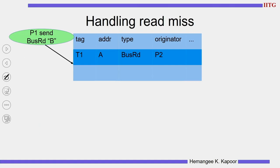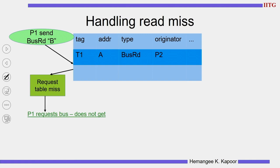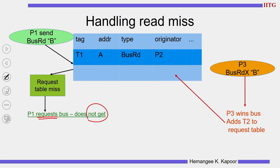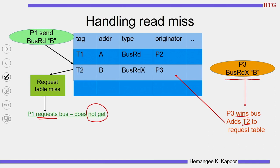The third case is when there is no pending transaction on that block. P1 says bus read on B and there is no entry for block B in the request table, so we can issue the request. However, before issuing, we arbitrate for the bus. If we don't get the bus and in the meantime P3 wants to do a read X on B, wins the bus, and adds a T2 entry, P1 may not have seen T2 and is still waiting for the bus.